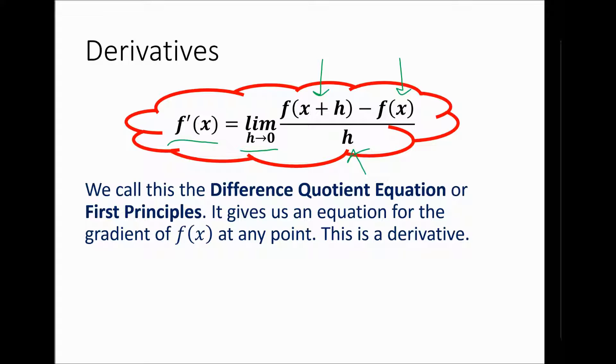This fancy formula in the big red bubble, textbook will refer to it as the difference quotient equation, because there's a difference, we're subtracting, and there's a quotient, we're dividing, hence the name, or I'll typically refer to it as first principles. So that's where derivatives come from. As I said, I'll show you a shortcut next time, but this is the mathematically rigorous definition of a derivative. So really important, it gives us the equation for the gradient at any point. It's a really powerful tool.